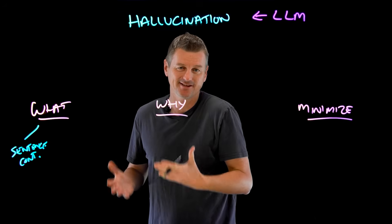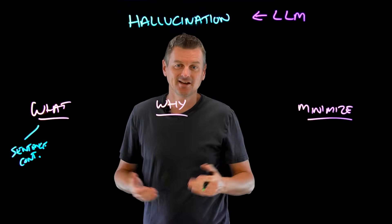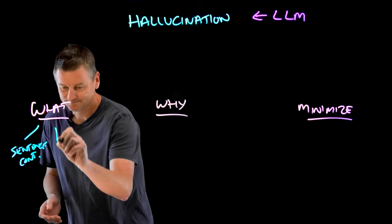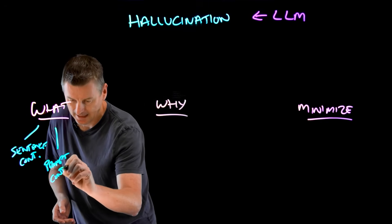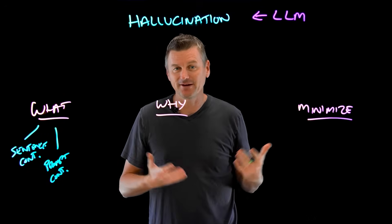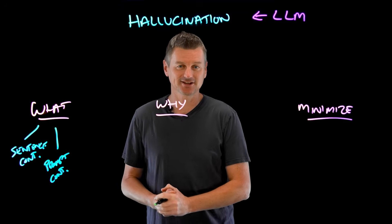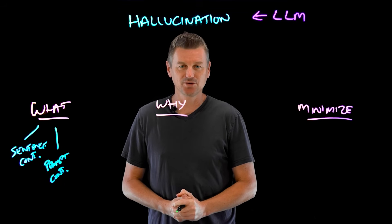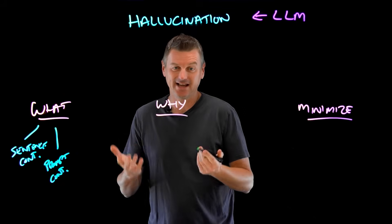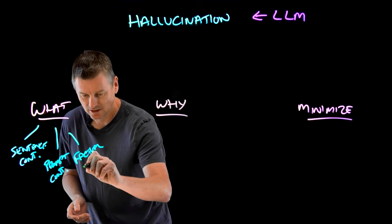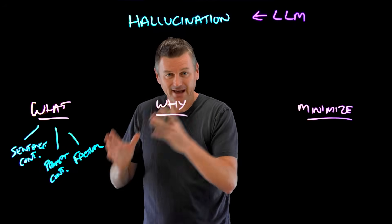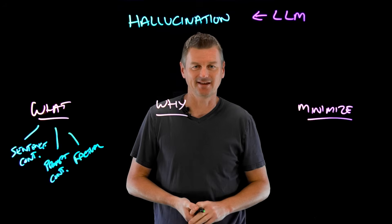Sentence contradiction is where an LLM generates a sentence that contradicts one of the previous sentences — for example, 'The sky is blue today' followed by 'The sky is green today.' Another example would be prompt contradiction, where the generated sentence contradicts the prompt used to generate it. So if I ask an LLM to write a positive review of a restaurant and it returns 'the food was terrible and the service was rude,' that's a direct contradiction. Then there are factual contradictions — absolutely nailed-on facts that it got wrong, like 'Barack Obama was the first president of the United States.'